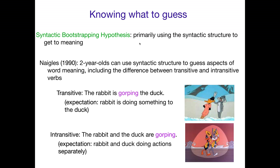One of the earliest examples comes from Nagel 1990, where two-year-olds use syntactic structure to guess aspects of word meaning, including the difference between transitive and intransitive verbs. Transitive verbs have an object — a doer and a doee. So when you say 'the rabbit is gorphing the duck,' adults expect the rabbit to be doing the gorphing and the duck to have it done to it. With intransitive verbs there's no object, just a doer — 'the rabbit and the duck are gorphing' — so both are doing the action but neither is having it done to them. Two-year-olds have also figured this out, using the order and combination of nouns to determine whether an action has a doee or not.